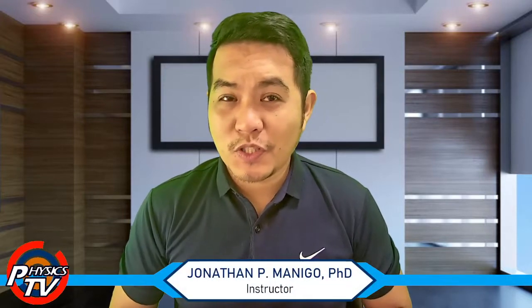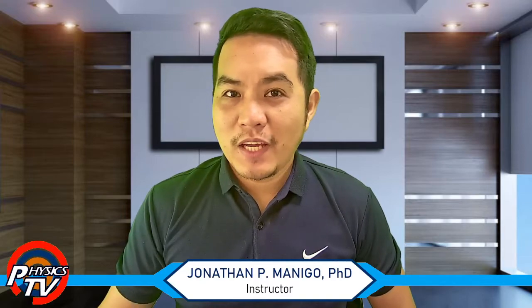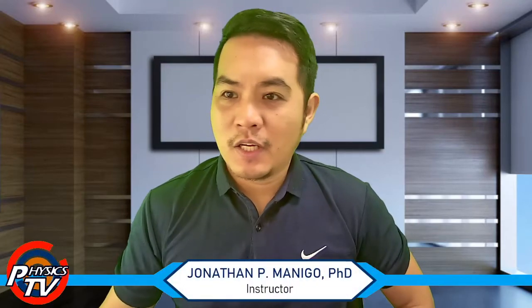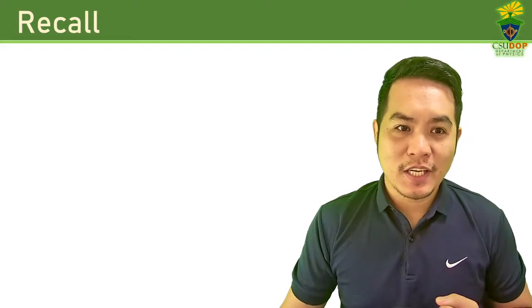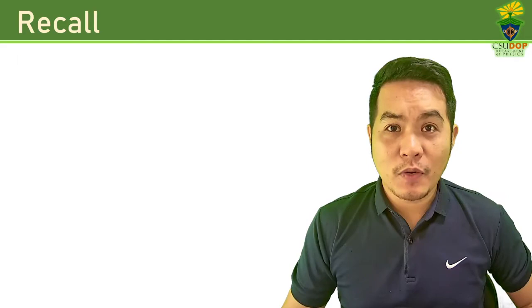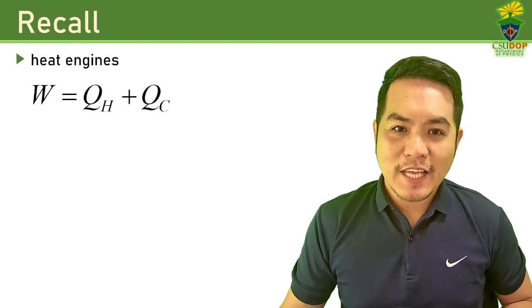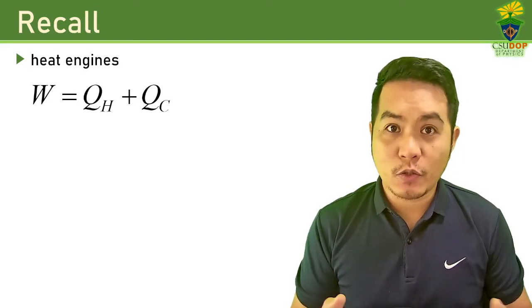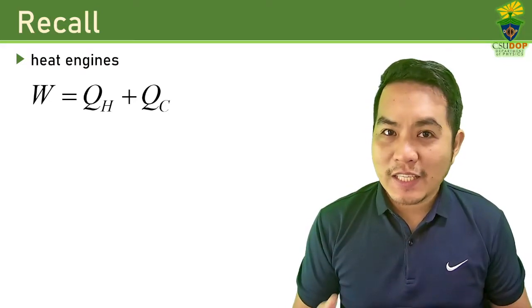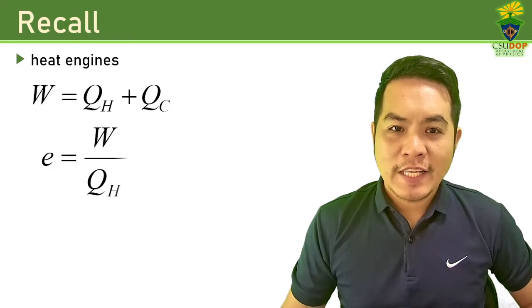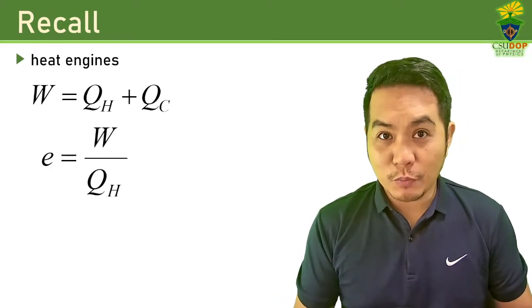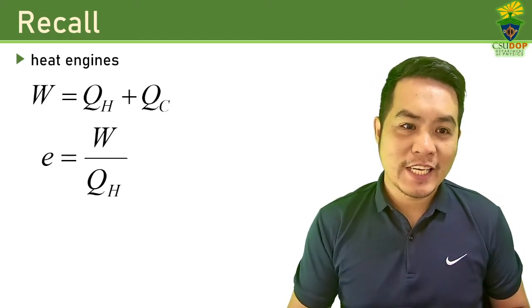Welcome back to the course on thermodynamics. We are still on Unit 4. Before we proceed with this lesson, let us first review what we have discussed so far. In the previous lesson, we discussed heat engines that undergo a cyclic process. In these engines, the work done is the total heat absorbed minus the total heat released to a lower temperature region. The efficiency is the work output over the heat input to the engine.